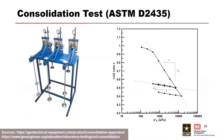Consolidation tests will be covered in much more detail in the afternoon exercise. A typical odometer test produces a curve showing the compression index C-sub-c and the recompression index C-sub-r — your virgin compression curve and your recompression curve. More detail on that will come in the next module.